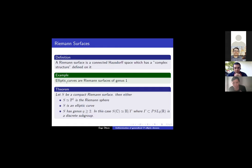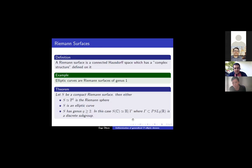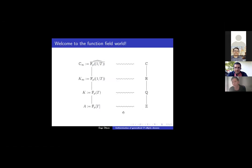We can think of elliptic curves as examples of Riemann surfaces of genus one. For compact Riemann surfaces, we have that it's either the Riemann sphere if genus is zero, or an elliptic curve if genus is one, or if genus is greater than one, it's a quotient of the upper half-plane. So the question is: what are the analogues of such objects in the function field setting? Welcome to the function field world.